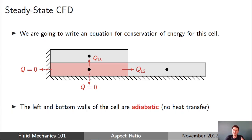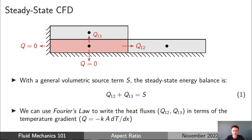With adiabatic boundary conditions on the bottom and left faces, we only need to consider heat flux across two faces: q12, the heat transfer from cell one to cell two on the right, and q13, the heat transfer from cell one to cell three on the top. Those two heat fluxes coming out of the cell balance the rate of heat generation within the cell, represented by a volumetric source term S. The steady state energy balance is simply q12 plus q13 equals S.